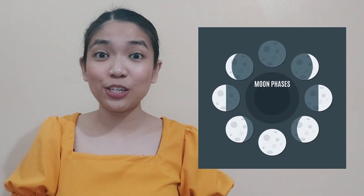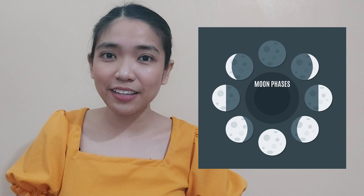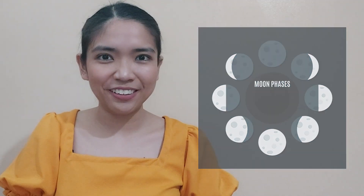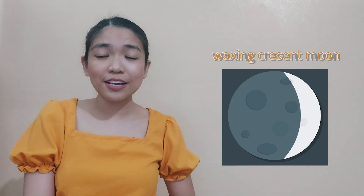Let us go back to the pictures that I have shown you a while ago and let us identify the face of the moon. Here is the first picture. This is what we call the waxing crescent moon. How about this? What face of the moon is this? Great! We call it last quarter moon. And the last picture, it is the... This is the full moon.